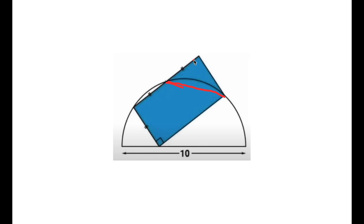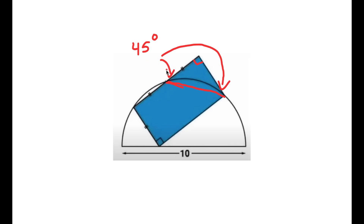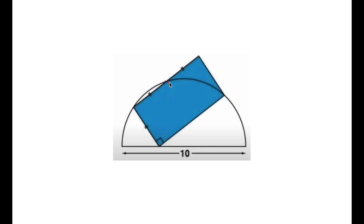This angle right here is 90 degrees because these two are opposite angles, so they're equal to each other. Since this angle is 90 degrees and this is a 45-45-90 triangle, these two angles are going to be 45 degrees. That means this angle right here plus this angle is equal to 180, so this angle right here is 135 degrees.